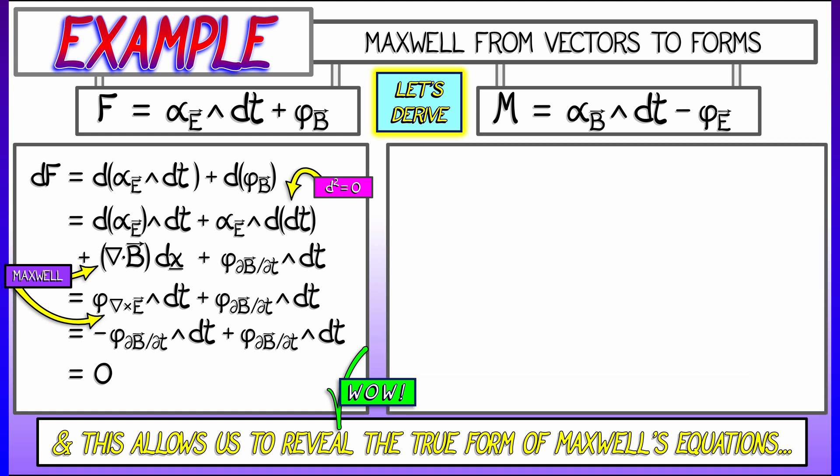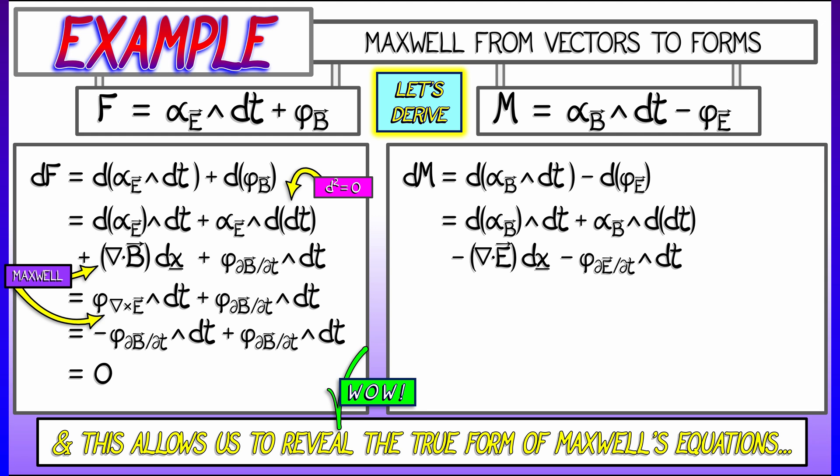Now let's do the same thing with m. We're going to follow the same pattern. When we take the derivative of m, I get the derivative of alpha b wedge dt minus the derivative of phi sub e. That first term, the derivative distributes, I get d of alpha b wedge dt plus alpha b wedge d of dt. For the second term, again, I have to be careful. I get minus the divergence of e times dx minus the flux of partial e partial t wedge dt.